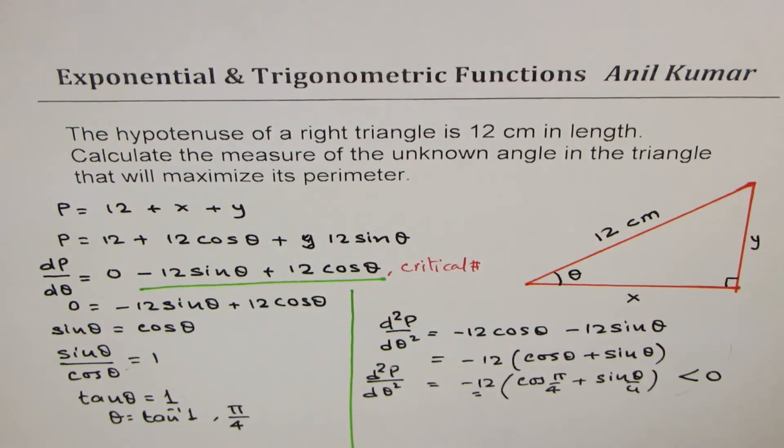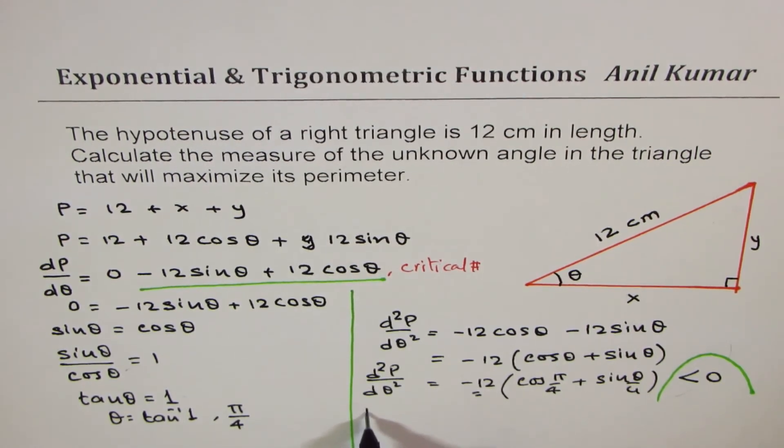Less than 0 means that the graph of the function is concave down, correct. So second derivative less than 0 for a critical number means that we do have maximum perimeter at theta equals to π/4.